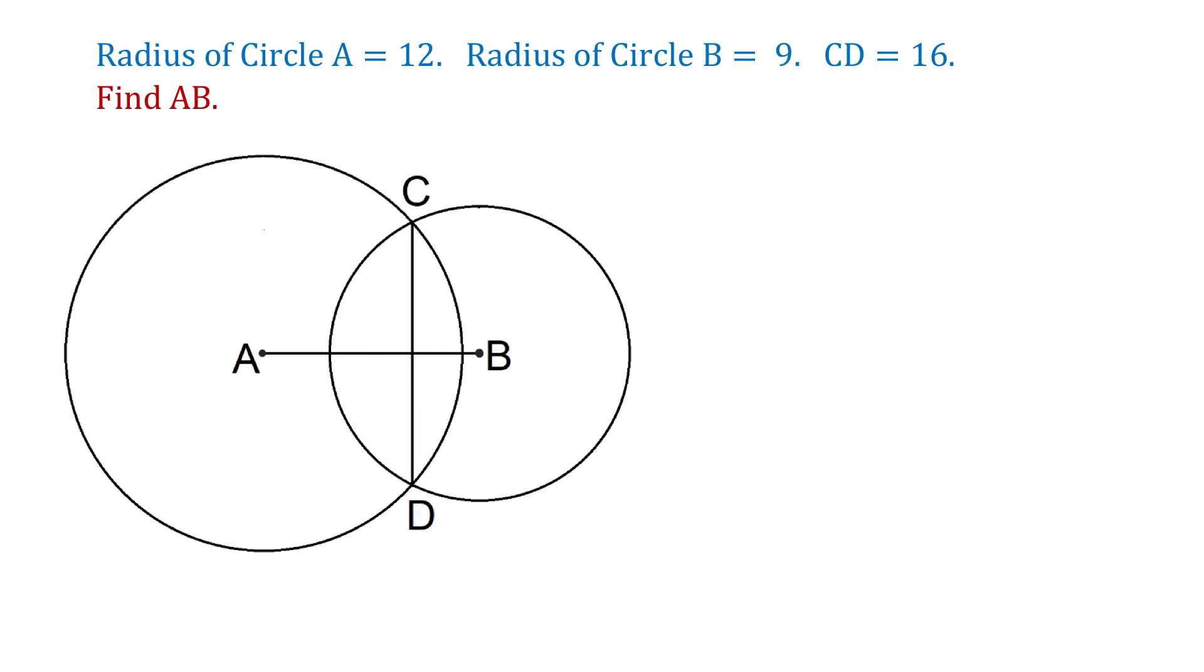In this figure, we have two intersecting circles, and we need to find the distance between their centers. Circle A has the radius of 12 units, and circle B has the radius of 9 units. Also, the line segment CD has the length of 16 units.